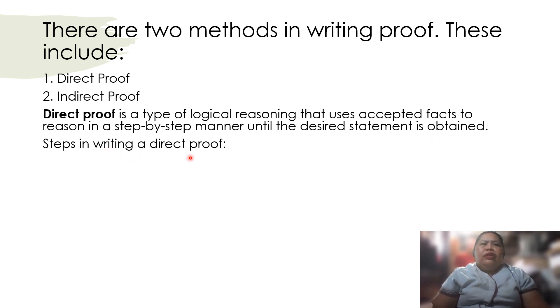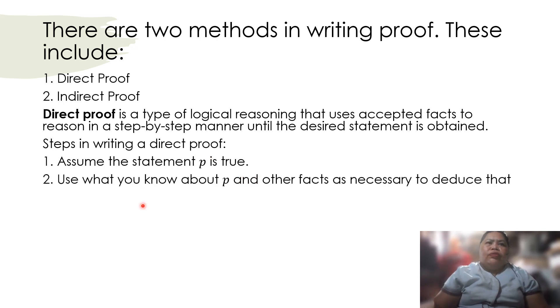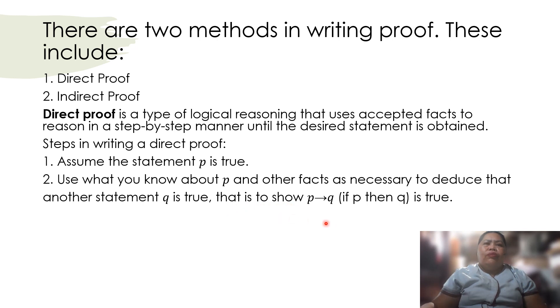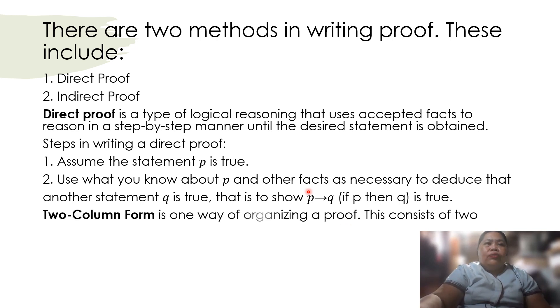Steps in writing a direct proof: One, assume the statement P is true. Two, use what you know about P and other facts as necessary to deduce that another statement Q is true. What is to show: P implies Q, or if P then Q is true, or the hypothesis and the conclusion is true.